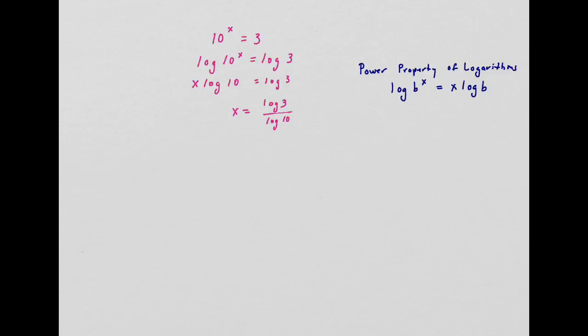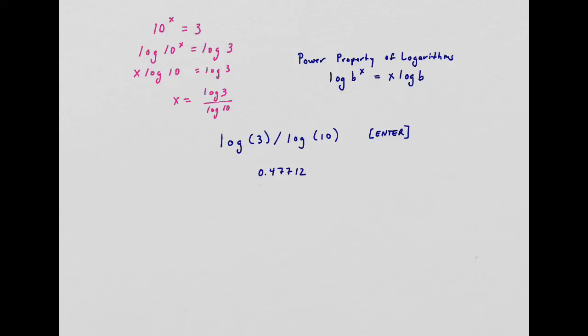And now I just need to turn to my calculator. When I use my calculator I have to be very careful about parentheses, so I need to type in the question just like I have it here, and once you hit enter you get the answer of 0.47712.